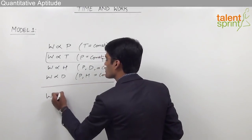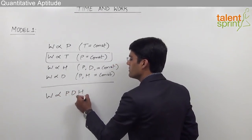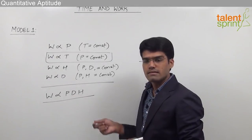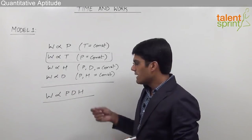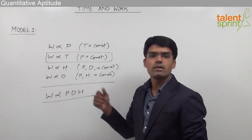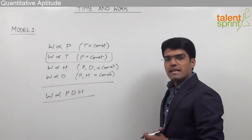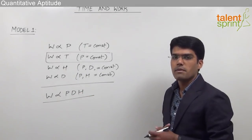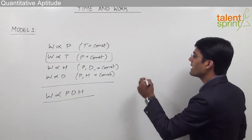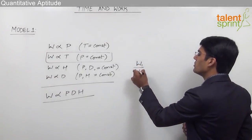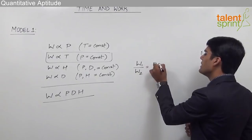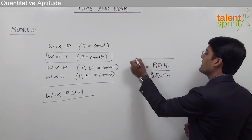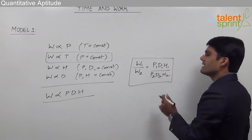When all three variables are varying, the combined relationship is: work is proportional to number of persons multiplied by number of days multiplied by number of hours per day. From this proportionality we can derive the important equation: W1/W2 = (P1 × D1 × H1) / (P2 × D2 × H2).